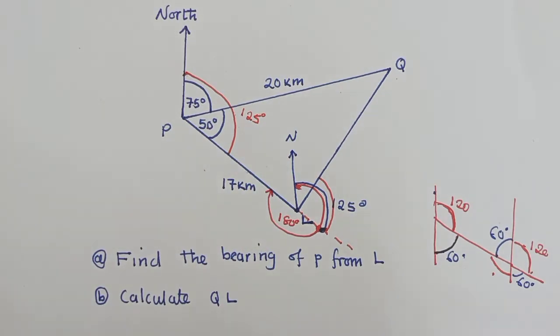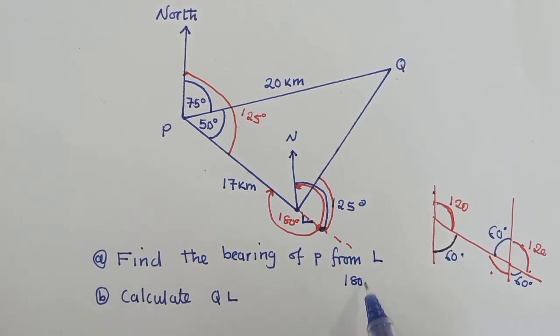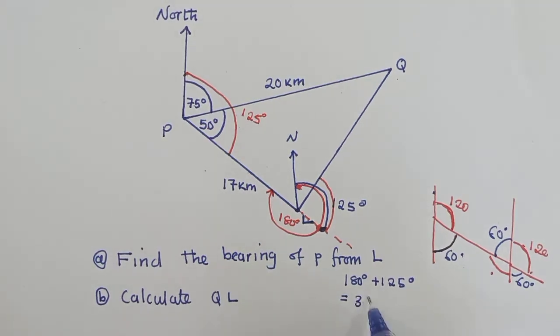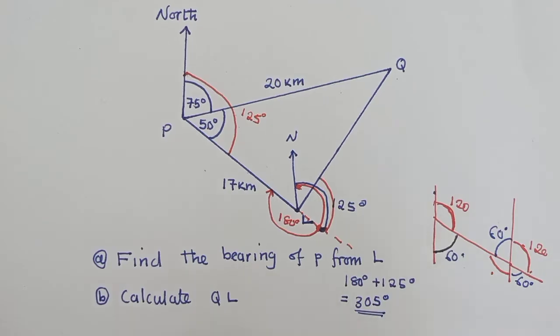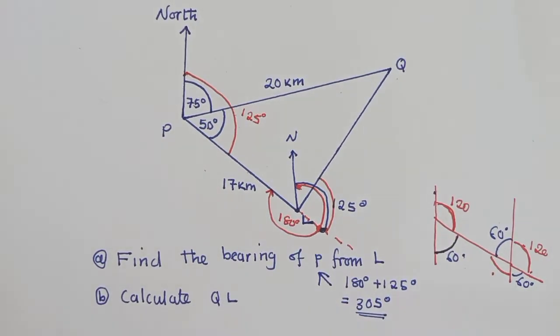So now after doing that, you now come and say 180 degrees plus 125 degrees. What are we getting? When you add 125 plus 180 we are getting 305 degrees. So this is the solution for question A. Hopefully you have gotten the idea.